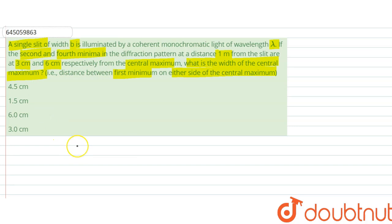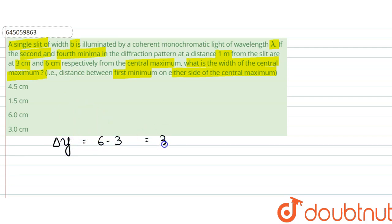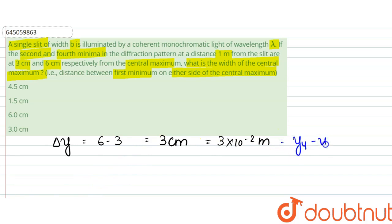First, we find the difference between the second and fourth minima. Delta y equals 6 minus 3, which is 3 centimeters, or 3 × 10⁻² meters. This delta y equals y₄ minus y₂.